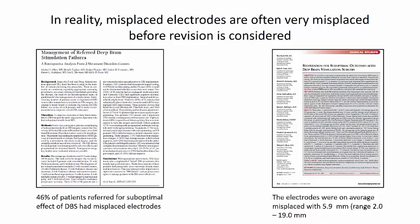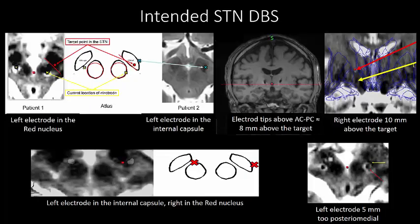46% of patients with the suboptimal effect of DBS were demonstrated to have misplaced electrodes, and these were misplaced with on average 6 mm. This is also in accordance with my own experience. I often get second referrals due to poor effect of DBS, and in most patients this is due to misplaced electrodes, and these are often 5 to 10 mm away from the intended target, as seen in these examples of intended STN DBS.